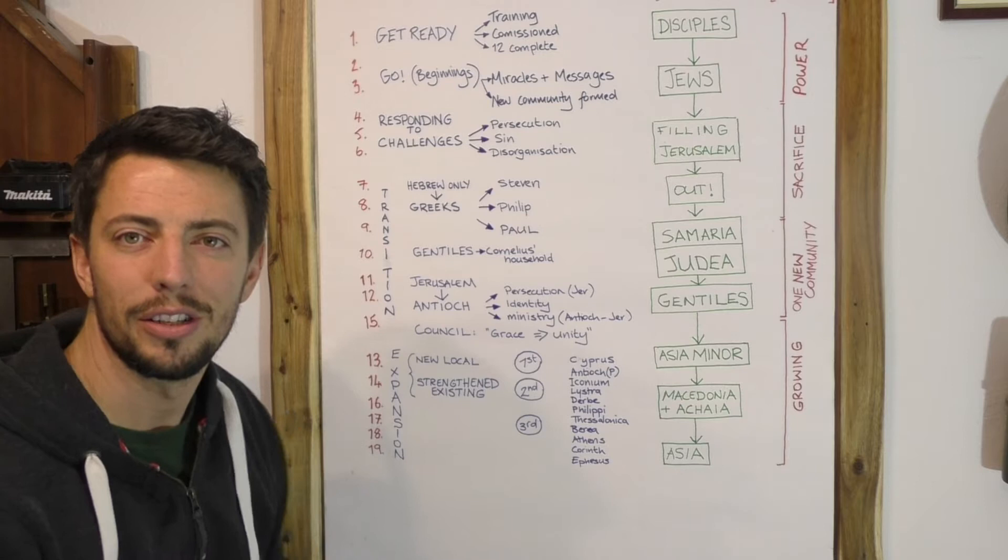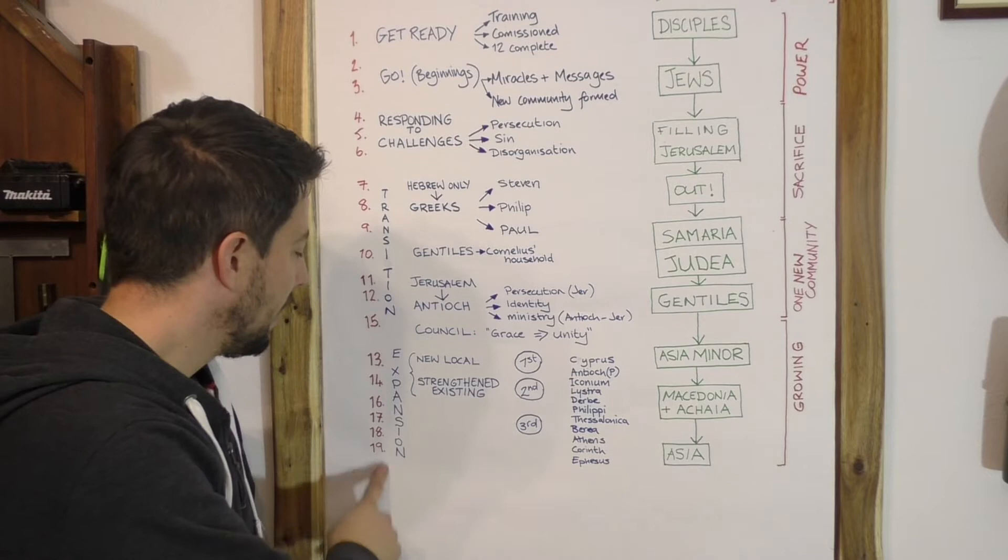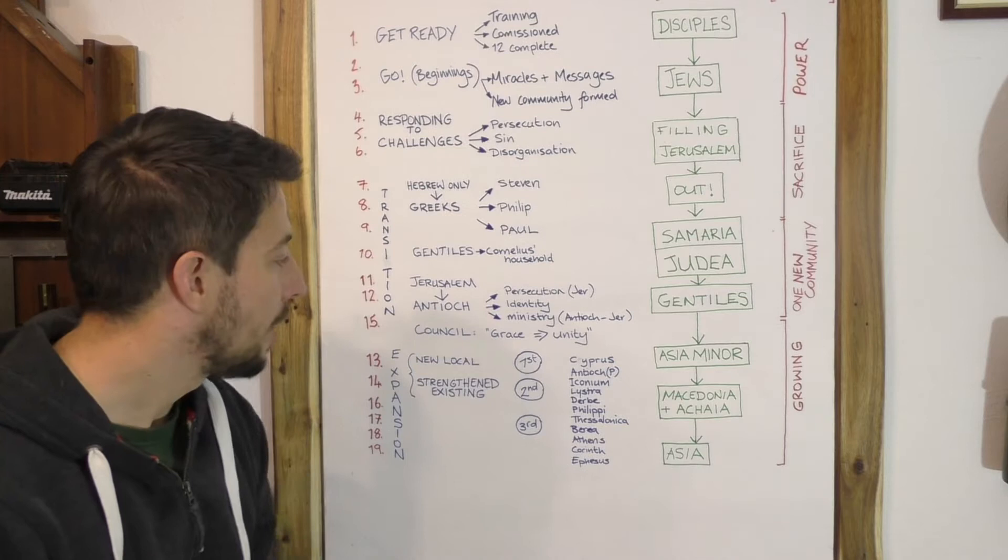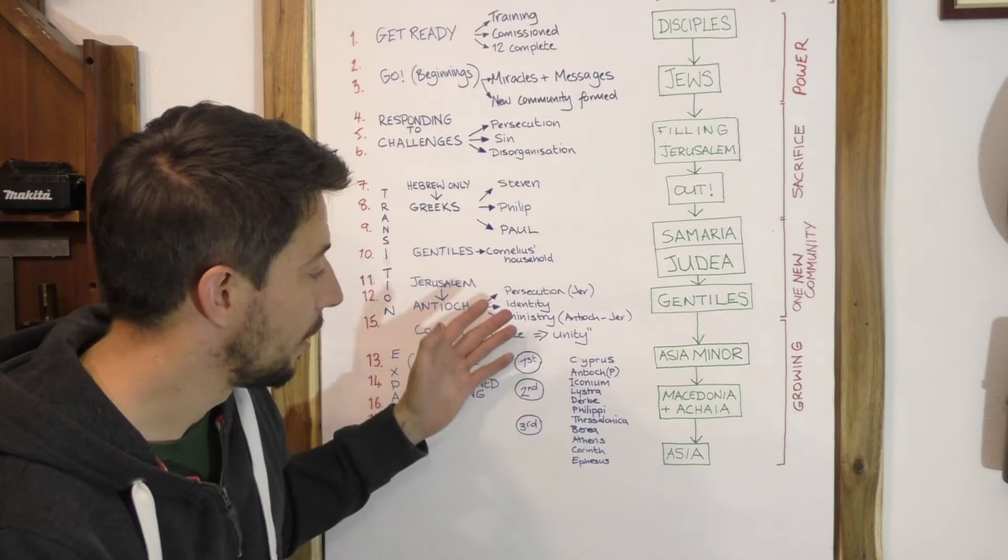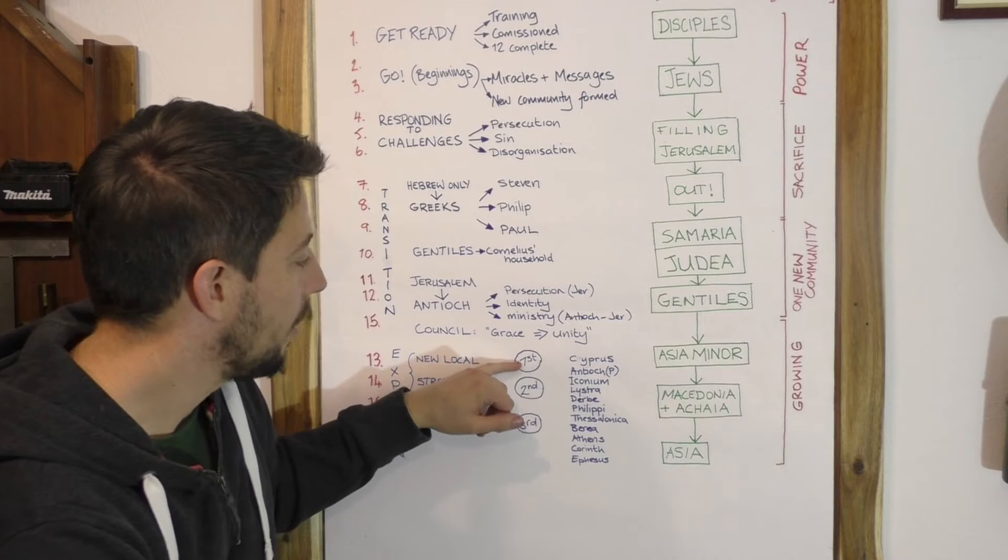We go through a period of transition and it's in this time that Antioch really becomes the new center. So for now the rest of the book we're going to see ministry happening out of Antioch. We head into these chapters for this section, we're going to see expansion. The chapters focus really on three missionary journeys.